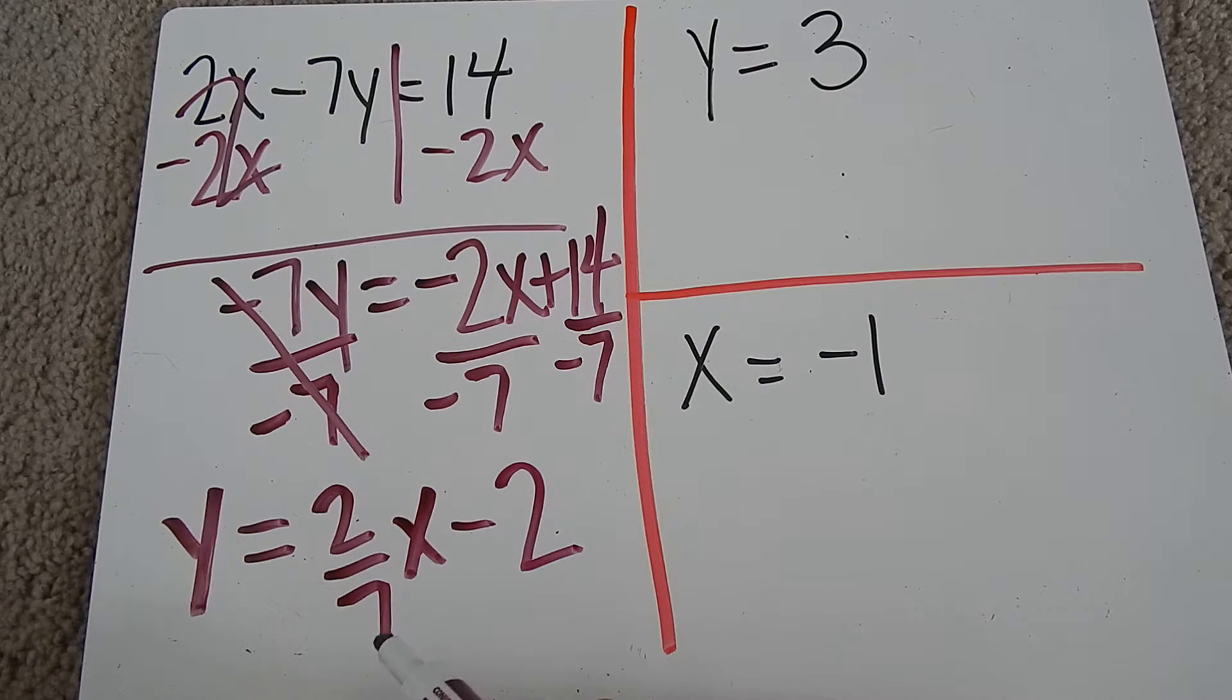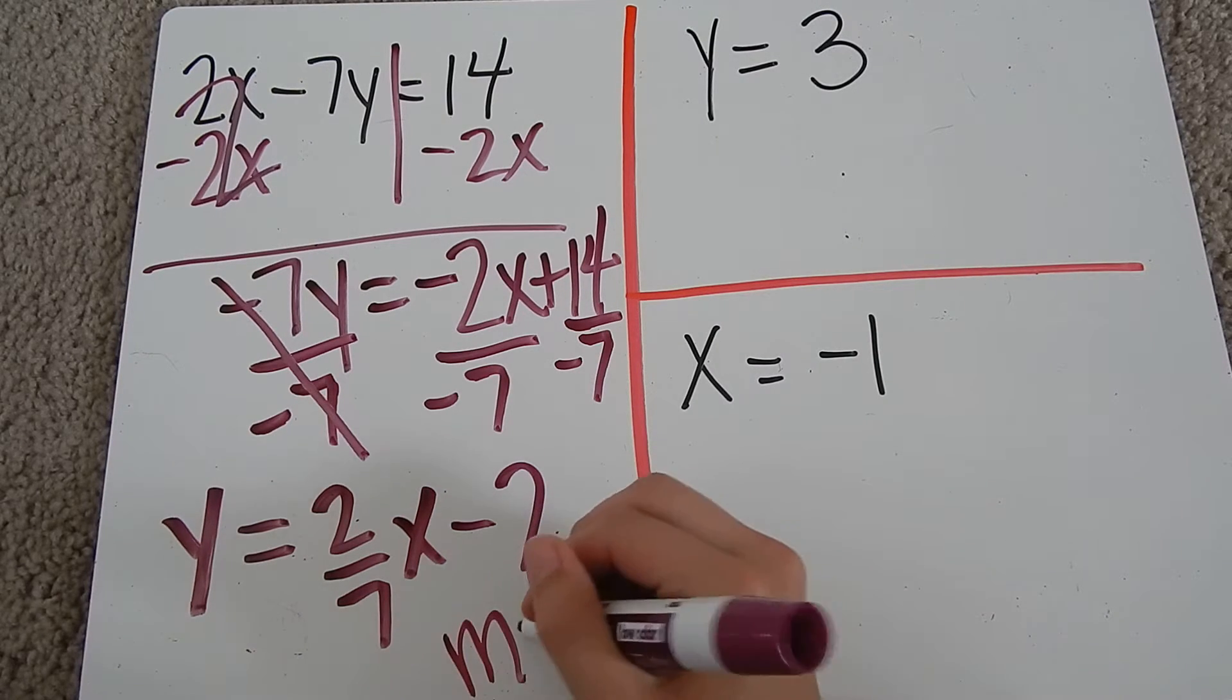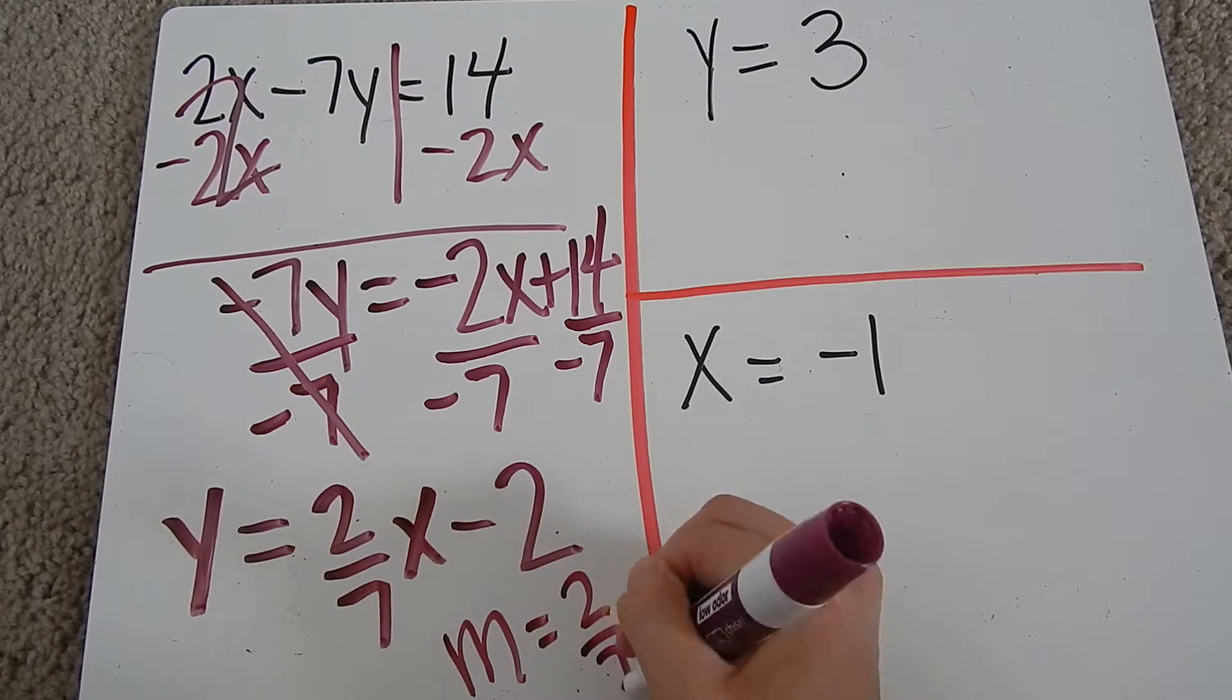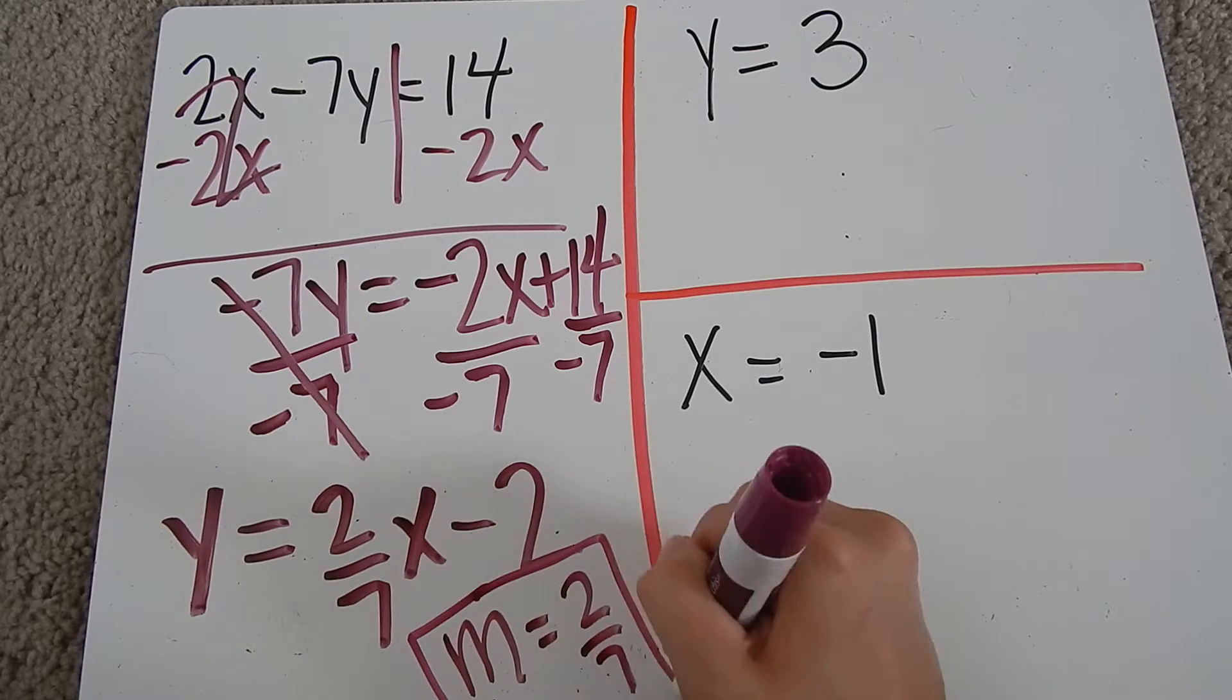Now that we have it in mx plus b form, we can figure out what our slope is. And obviously that's going to be 2/7 because it is attached to the x there.